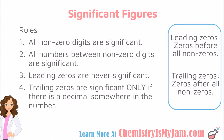All numbers between non-zero digits are significant. Leading zeros are never significant — a leading zero is a zero that comes before non-zero digits. Trailing zeros are only significant if there is a decimal somewhere in the number; trailing zeros come after non-zeros. Let's look at some examples of how you can apply these rules to some numbers.